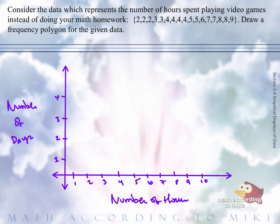Great. So now what we're going to do is we're going to plot some points. Notice that two appears three times, we put a point at two comma three. Namely, three appears twice, we put a point at three comma two.